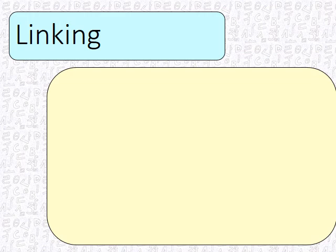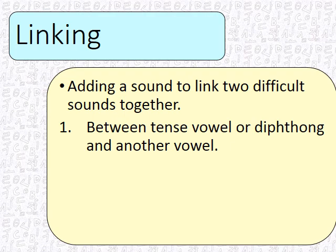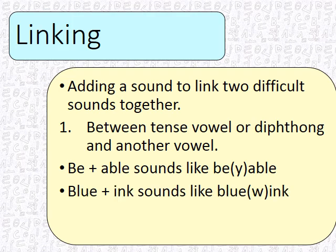Linking is first. Linking is adding a sound to link two difficult sounds together. There are four forms of this. Number one, between a tense vowel or a diphthong and another vowel. So 'be' is very tense, 'able' is another vowel, so a Y is added and it sounds like 'be-yable.' You can hear a little bit of a Y between the words instead of a space. 'Blue' has the tense 'ooh' sound, and 'ink' — it's hard to get from one to the other, so it sounds like 'blue-wink.' There is a little bit of a W in between the two instead of a space.